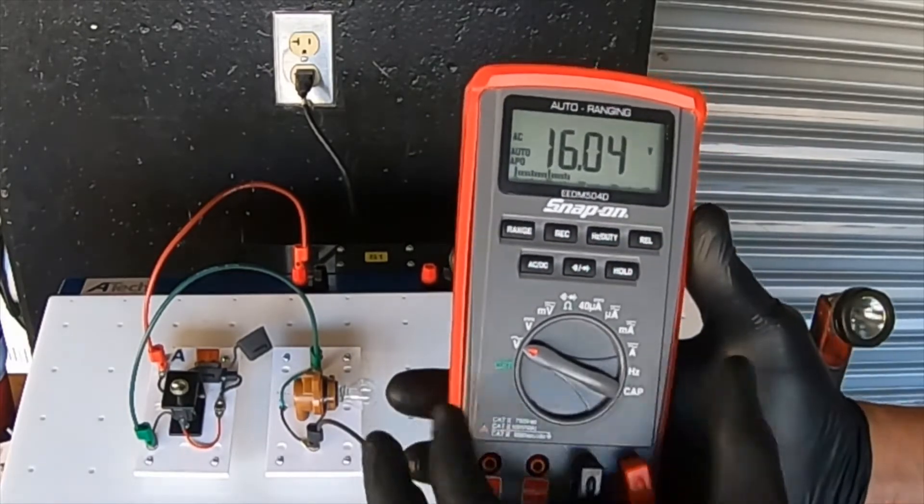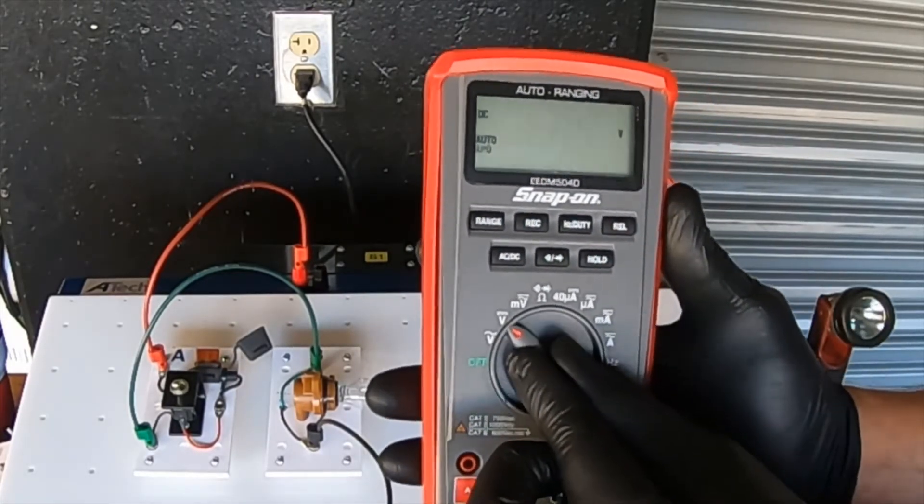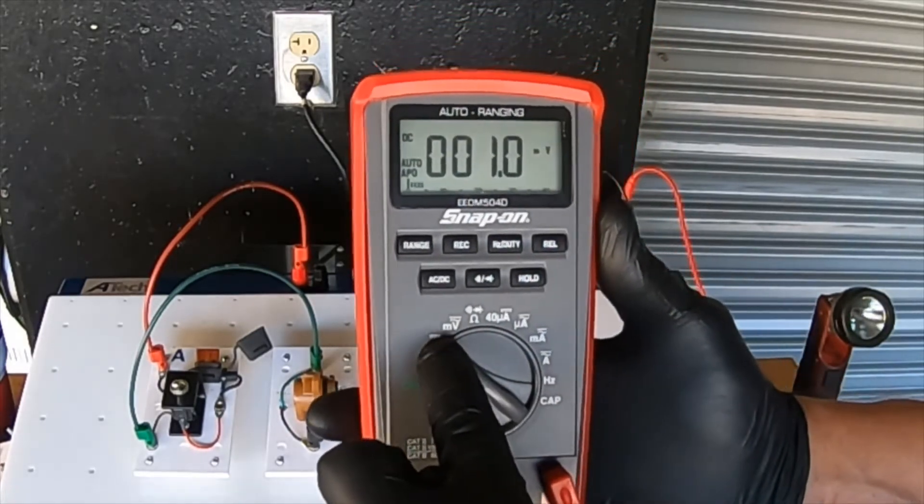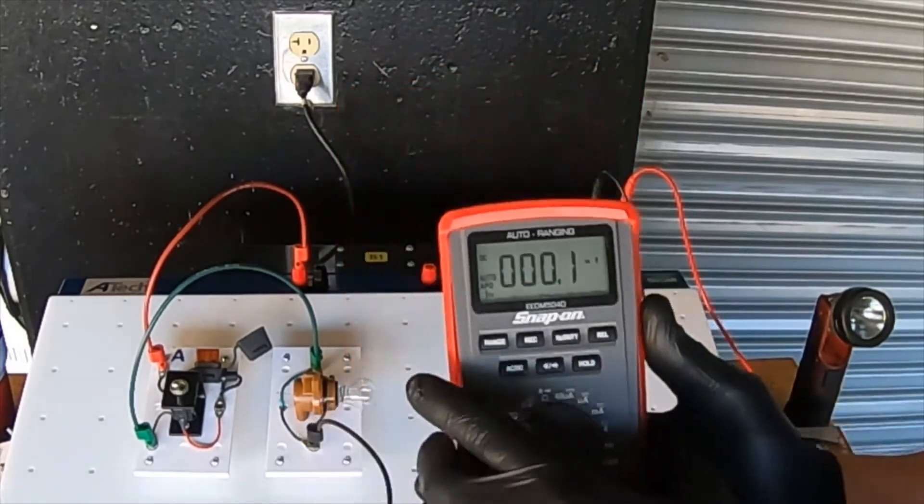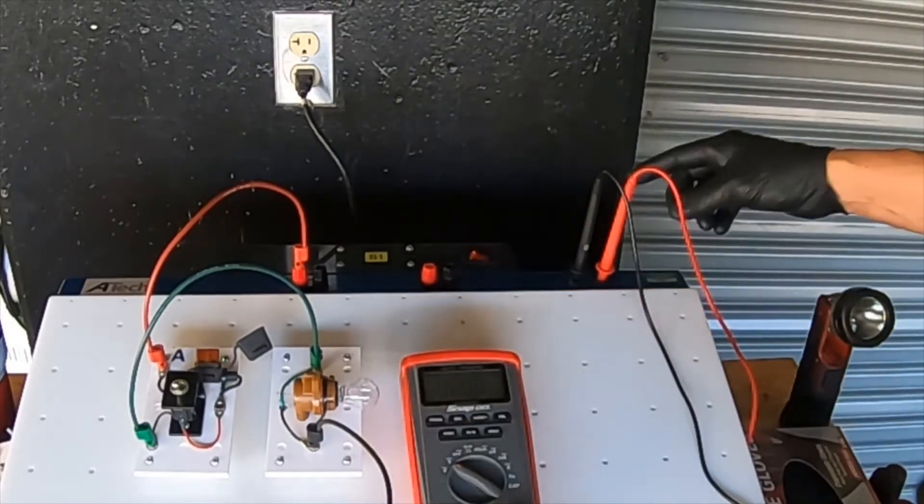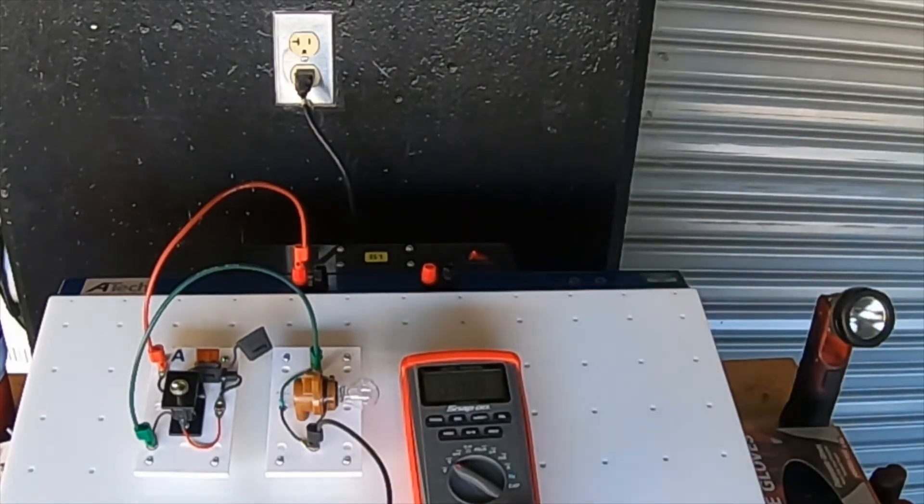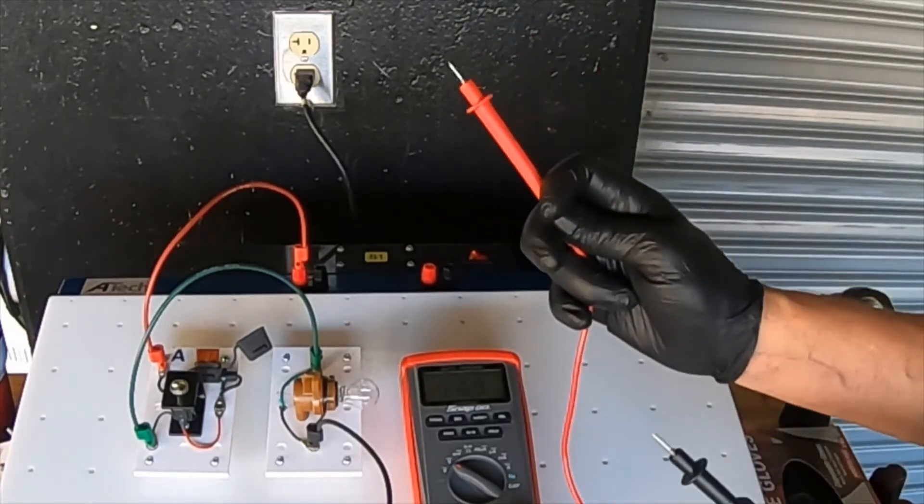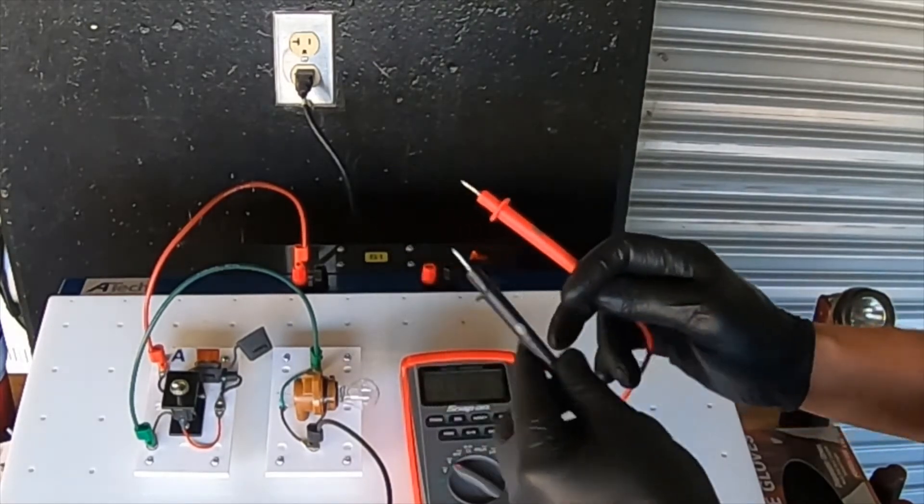We are now going to move on to DC volts. So we are going to select the DC setting, which is the V with the dotted and solid lines above it. DC volts has a polarity, so it is important to get an accurate reading that we place the red lead in positive and the black lead into negative.